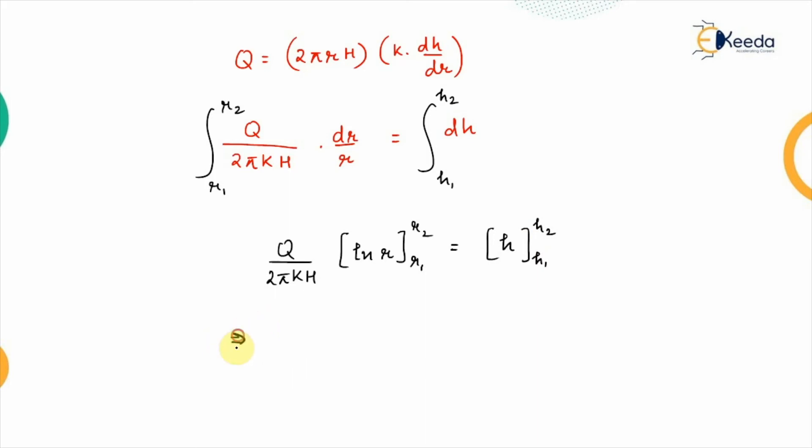Therefore, the final relationship that we will be getting that is 2πkh ln r2 minus ln r1 is equal to h2 minus h1. Now, to simplify this we will get q upon 2πkh ln this can be written as r2 upon r1 and this will be h2 minus h1.